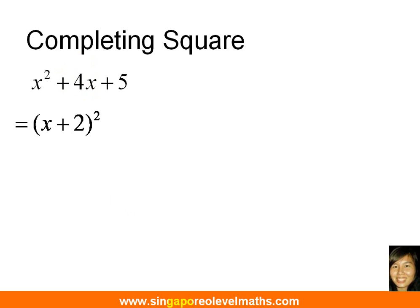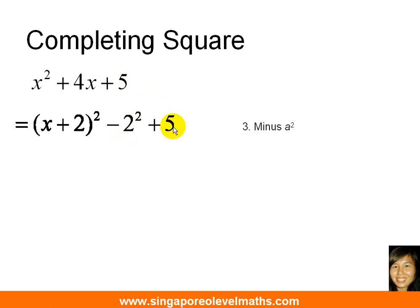So this is what we end up with — that was step 2. Step 3: you will need to minus away a². Just now, a was 2, so you need to minus away 2². The 5 you simply copy it down, and you have completed the question.